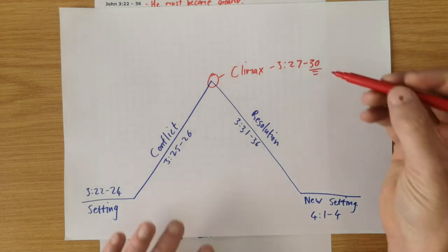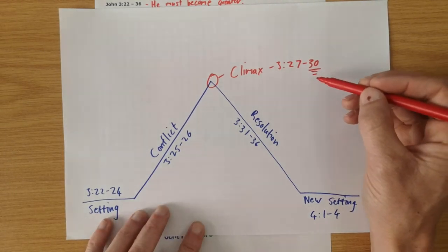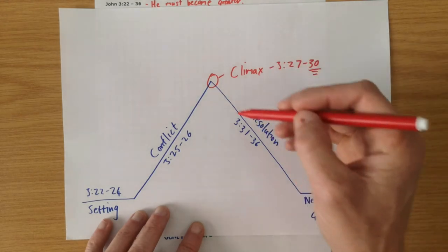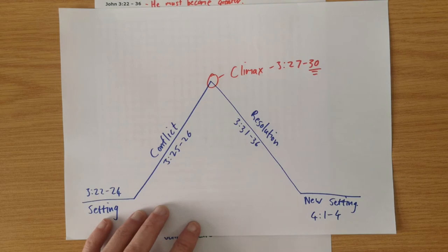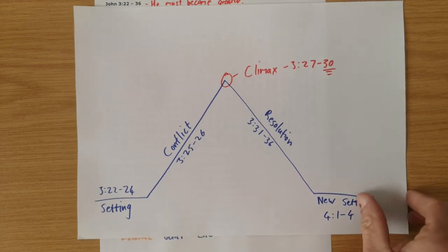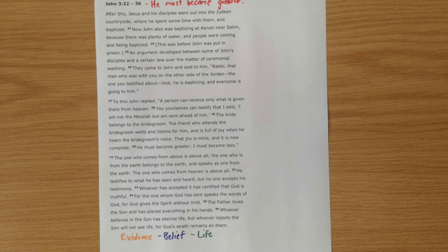But just looking at this climactic point, as John highlights his role, that he knew exactly what his role was, that's where the focus of the story needs to be. Looking at John being one pointing to Jesus and saying, He must become greater, I must become less. So the narrative plot arc is a useful tool just to see the structure of a story.